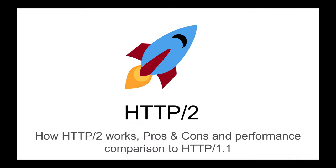HTTP/2, or H2 for short, is a major revision of the Hypertext Transfer Protocol that improves the performance of the web. It uses the binary protocol and multiplexing to achieve that. In this video I want to go through how HTTP/2 works, its pros and cons, and show a performance difference between HTTP/1 and HTTP/2 using some sample code.